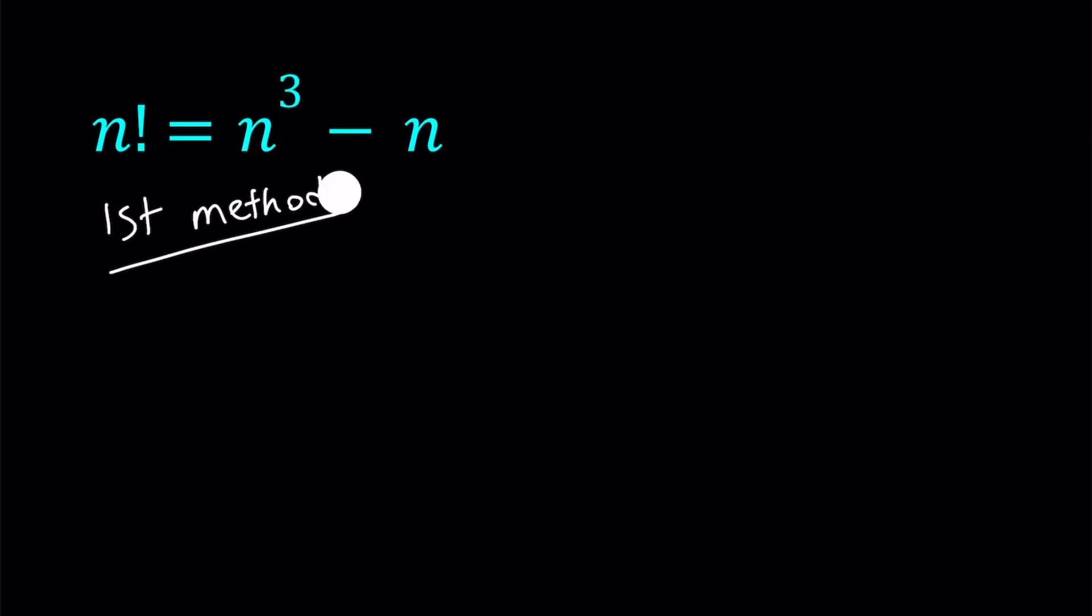Let's start with the first method. My first method basically involves, and it's going to be the same thing for the second method, we're going to turn this into a nicer equation. Let's go ahead and expand n factorial and write it as n times n minus 1 times n minus 2 factorial. And on the right hand side we have n times the quantity n squared minus 1.